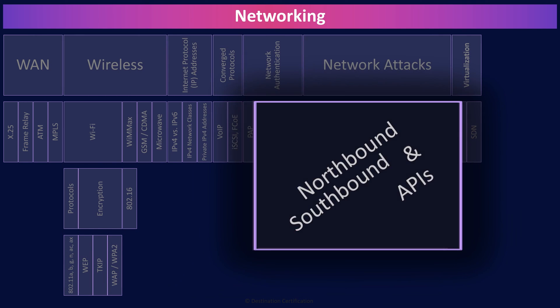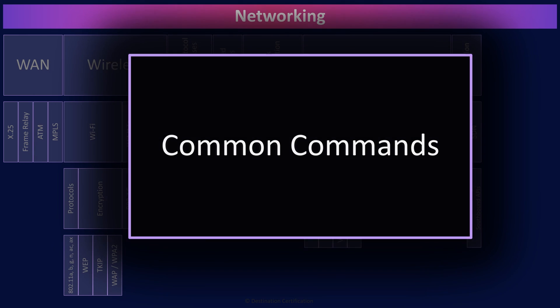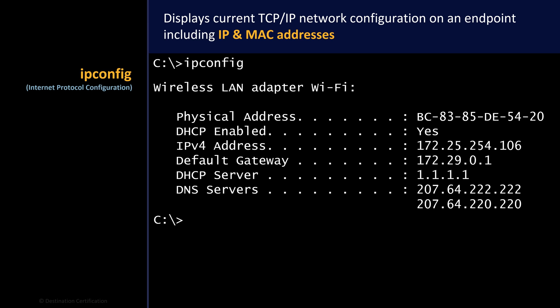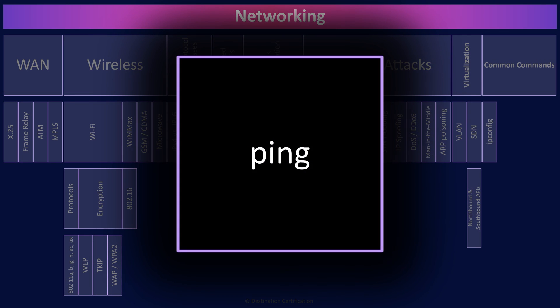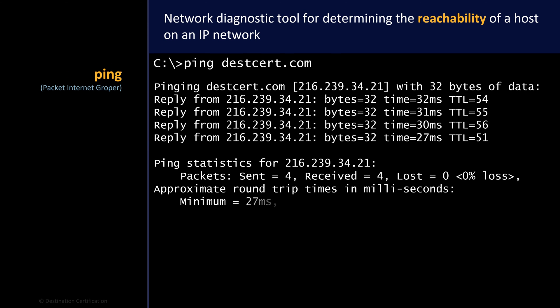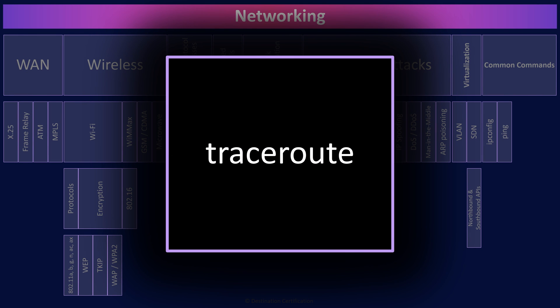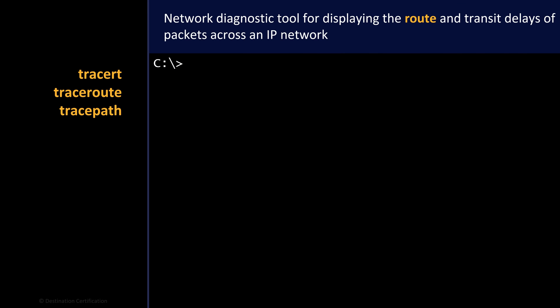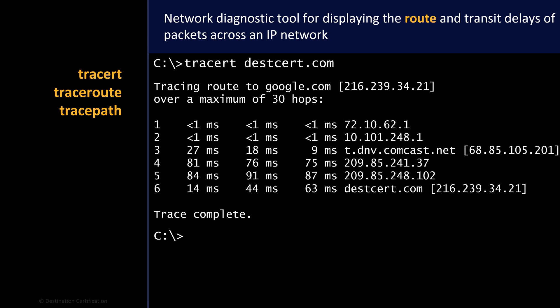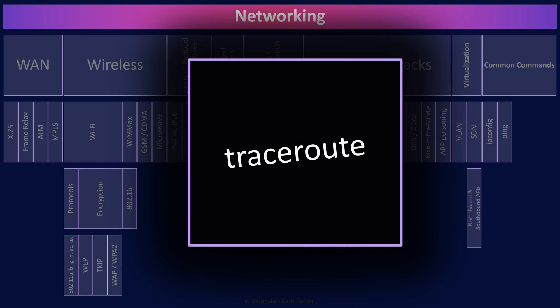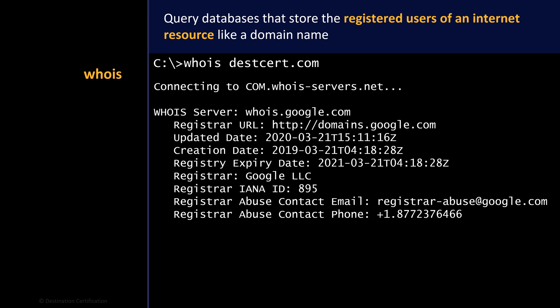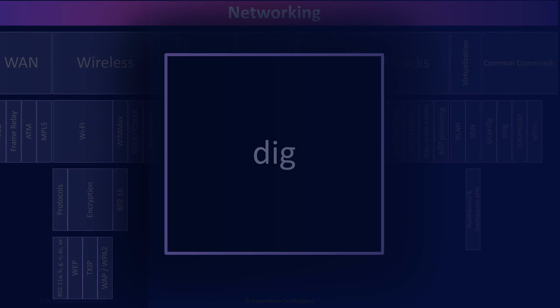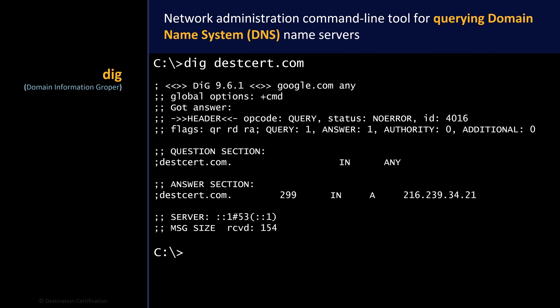Finally, a brief overview of some of the most common network tools. IPconfig displays current TCP/IP network configuration on an endpoint, providing the IP and MAC addresses on any network interface cards, plus the gateway, DHCP, and DNS IP addresses. Ping is used to determine the reachability of a host on an IP network — commonly used to see if a system is online and responding. Traceroute displays the route and transit delays of a packet across an IP network — you can see all the routers, gateways, and firewalls a packet passes through and the millisecond delays at each hop. Whois is used to query databases that store registered users of an internet resource like a domain name. Dig is used to query DNS to get all the details on a domain name, such as the name servers and mail server it uses.